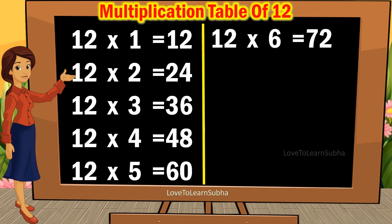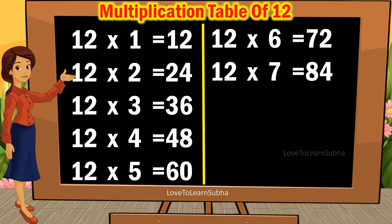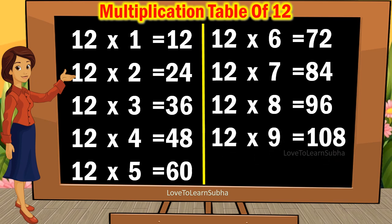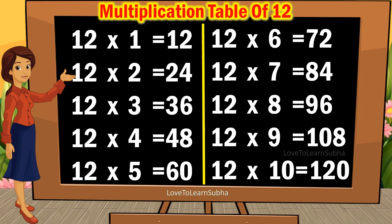12 6s are 72. 12 7s are 80. 12 8s are 84. 12 8s are 96. 12 9s are 108. 12 10s are 120.